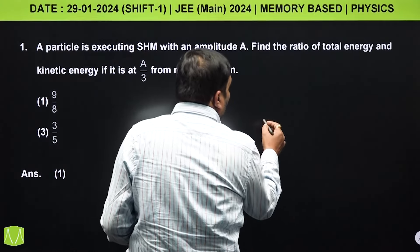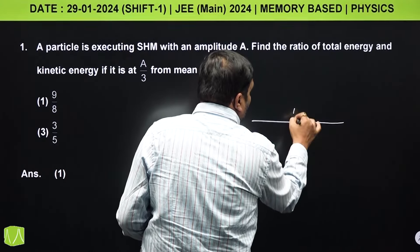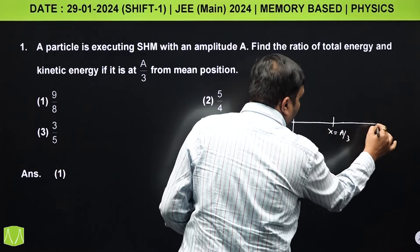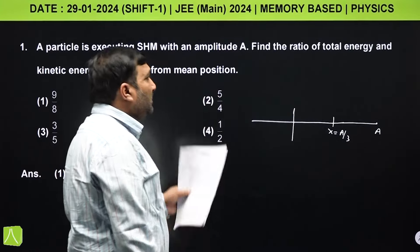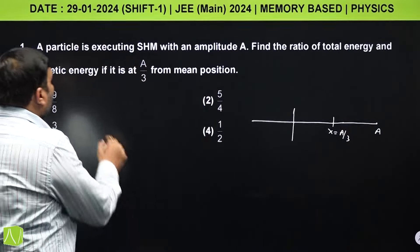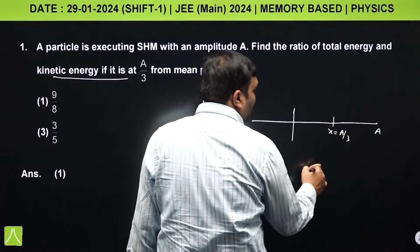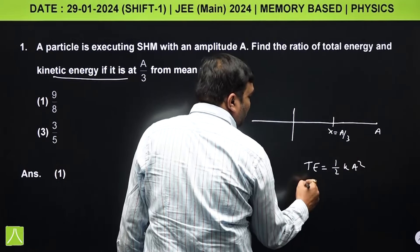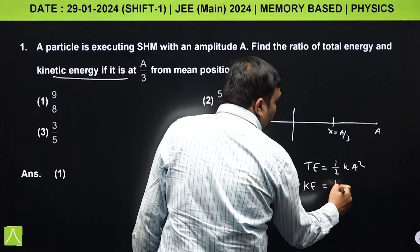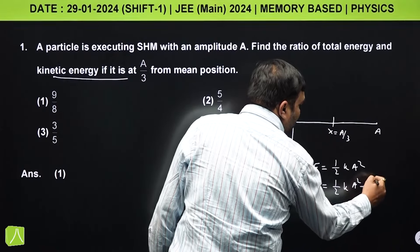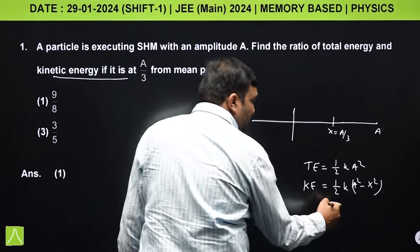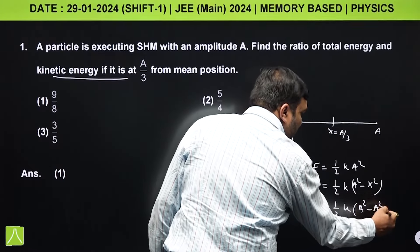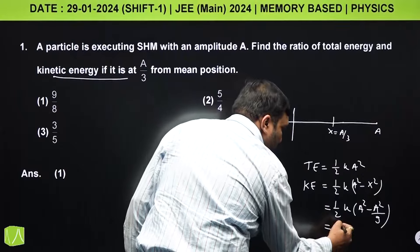For this SHM question, the particle is at x = a/3 and amplitude is a. We need to find the ratio of total energy to kinetic energy. Total energy = ½kA². Kinetic energy formula is ½k(A² - x²). Putting x = a/3, we get x² = a²/9, so kinetic energy = ½k(A² - a²/9) = ½k(8a²/9).